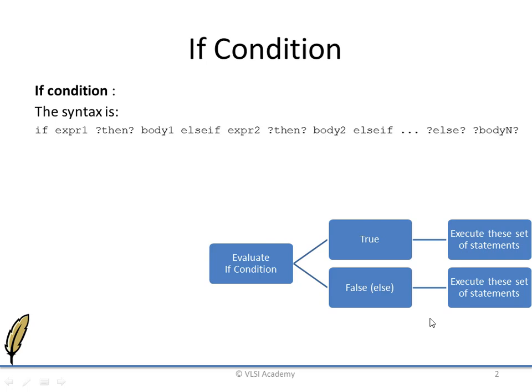Let us see one example. Assume x is set to 1. Now if the value of x is 2 then 'x is 2' is printed, or if x is not 2 then 'x is not 2' will be printed according to this code. So the output of this code will be 'x is not 2'. We will see more examples of the if condition related to applications later on — this is just to give you the idea of the syntax of if condition in TCL.